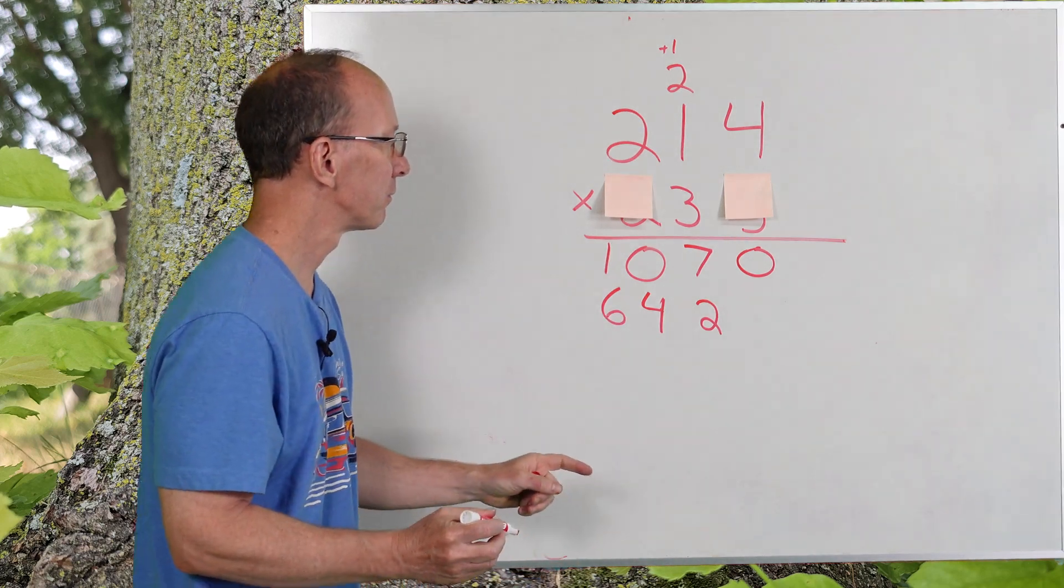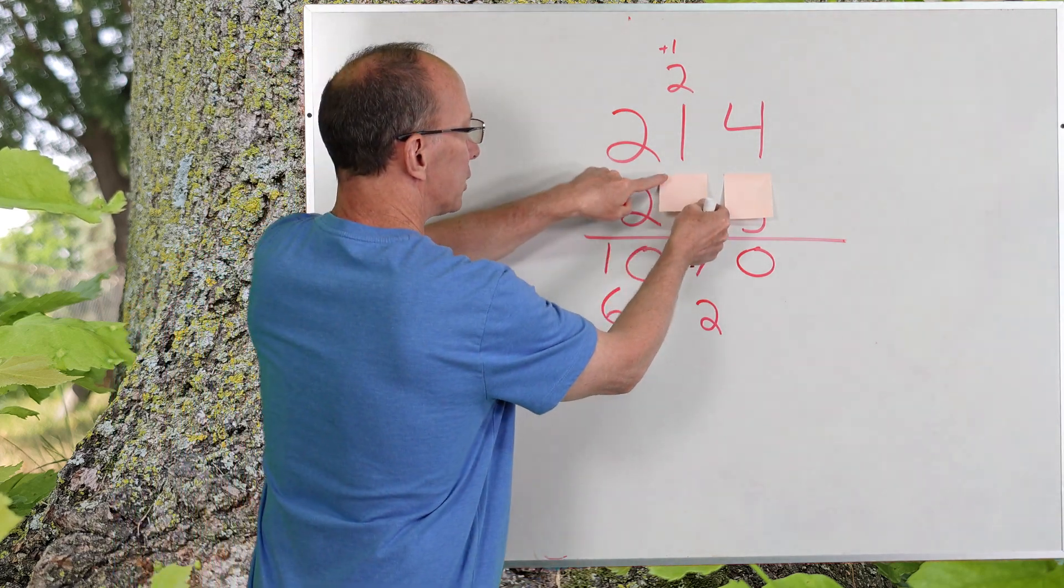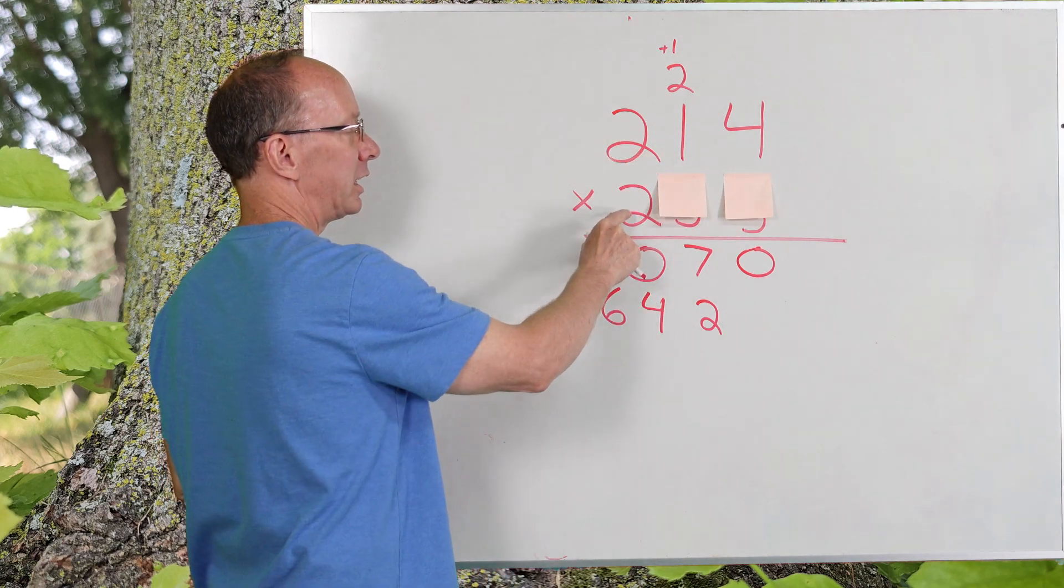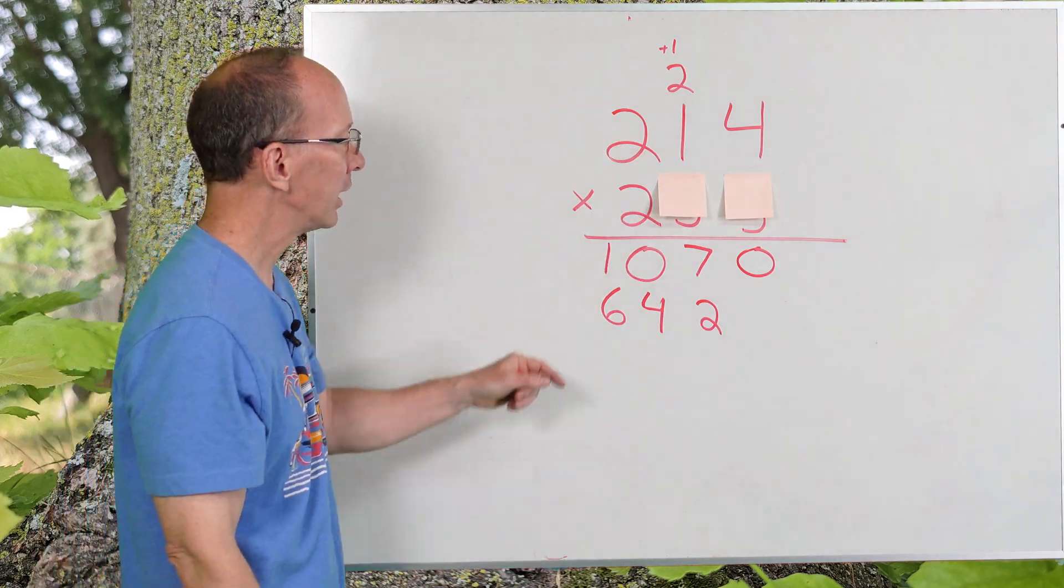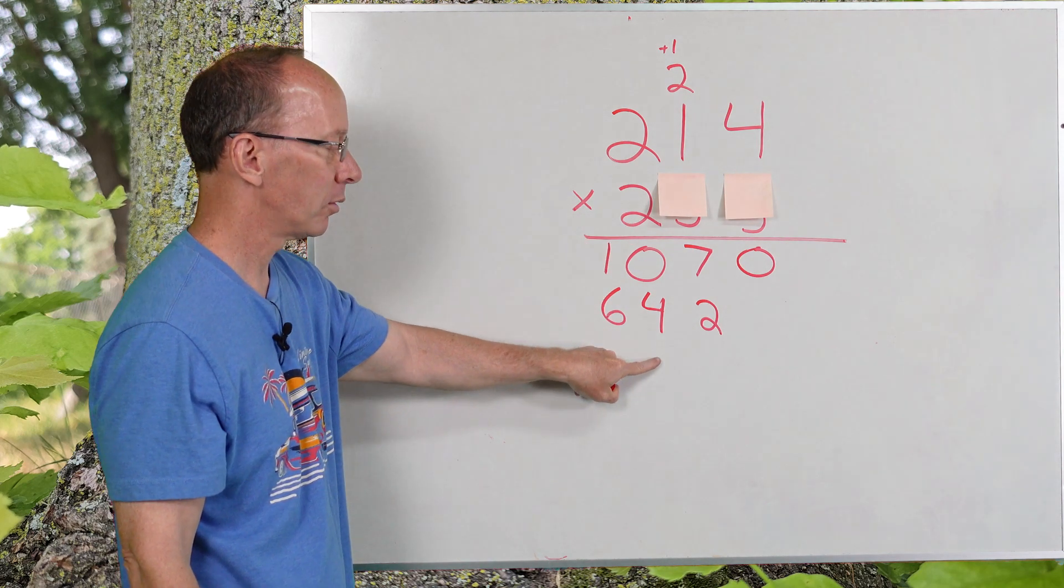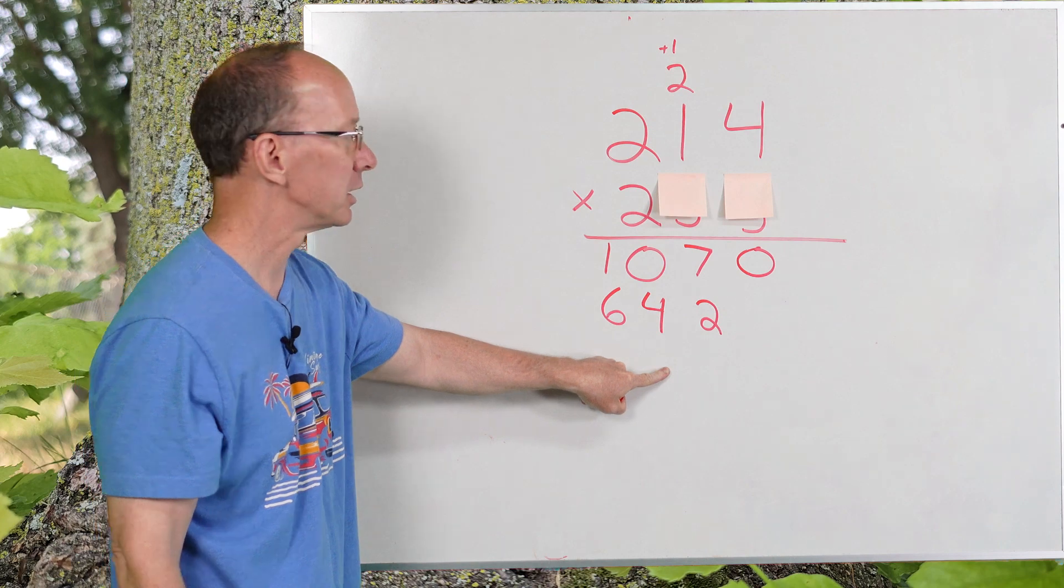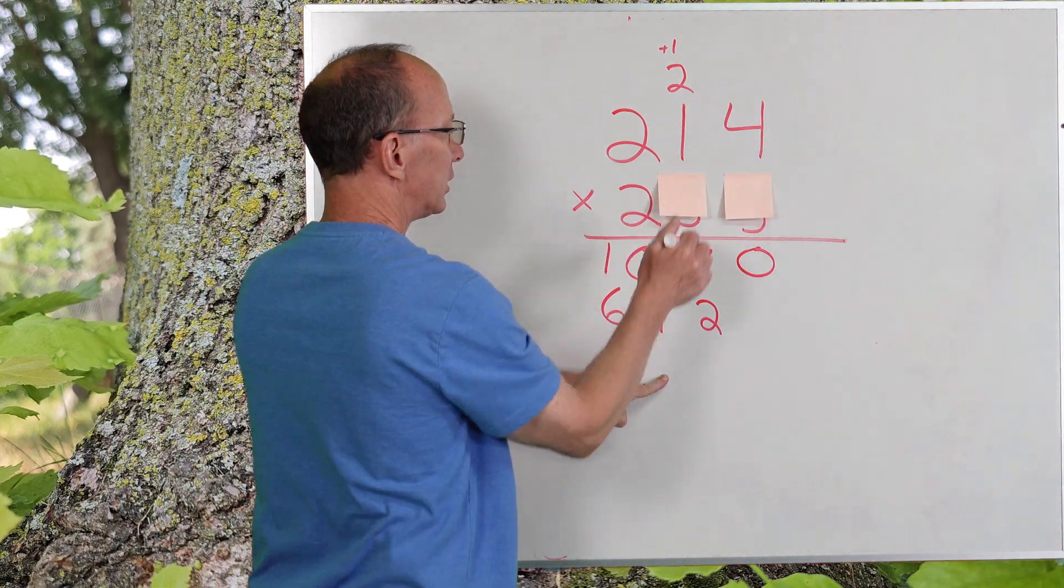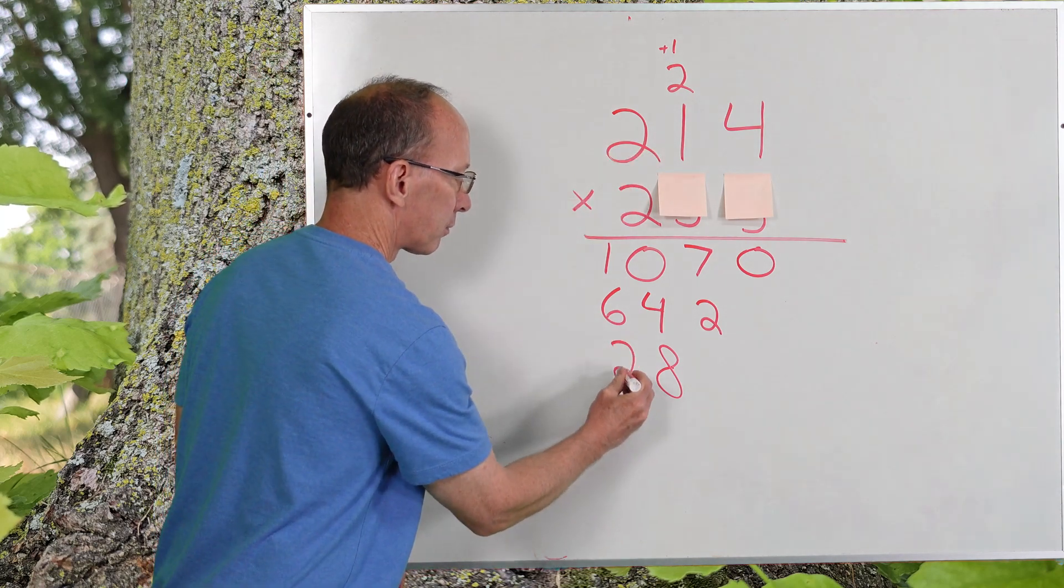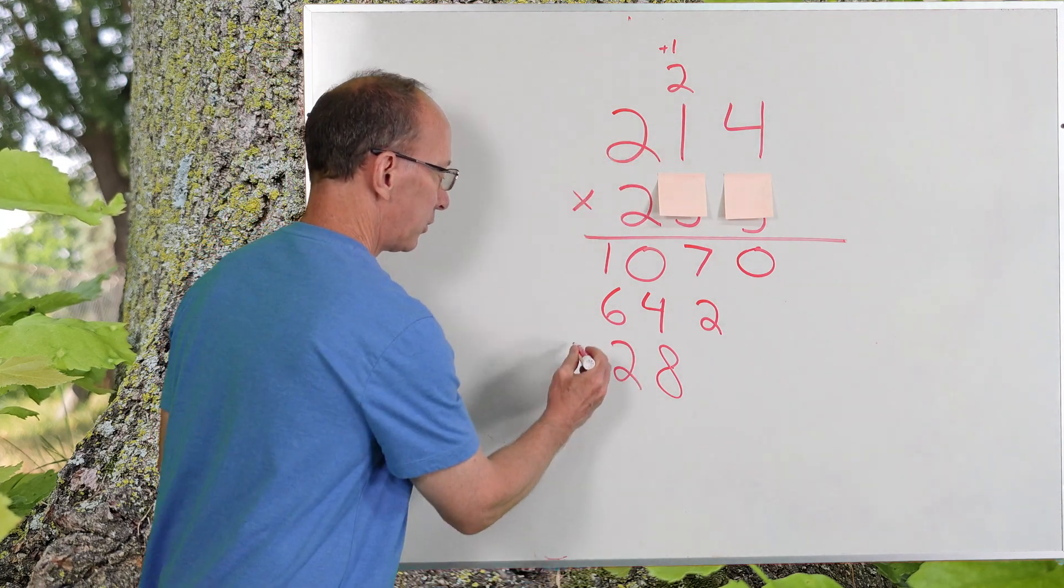Let's begin with the next number. I finished with the three. Now, I'm going to take 214 times two. And since I'm dealing with the two right here in the hundreds place, I'm going to start writing my answer in the hundreds place. So, two times four is eight. Two times one is two. And then, two times two is four.